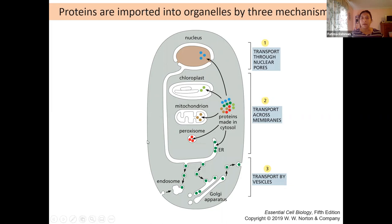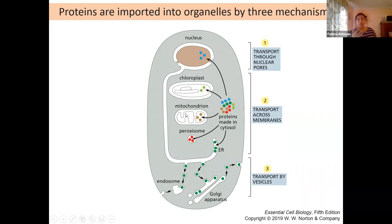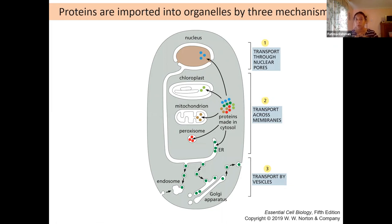When proteins are going through these specialized membranes, they need a very specialized structure in order to get through — the membranes of chloroplast or mitochondria are very different from the general plasma membrane. The third way proteins move is by vesicles, through the endomembrane complex. So you can have proteins going to the nucleus through the nuclear pore, across membranes to get to chloroplast, mitochondria, or peroxisome, or transported by vesicles as part of the endomembrane system.